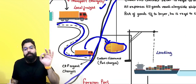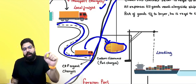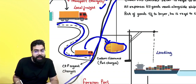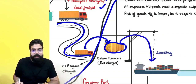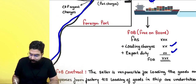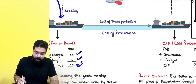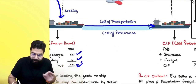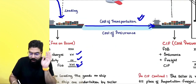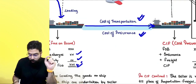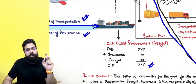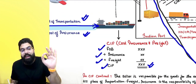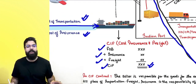FAS means alongside the ship. If you add loading charges and export duty to FAS, it becomes FOB. FOB plus ocean freight and cost of insurance gives you CIF — cost, insurance, and freight. FOB plus insurance plus freight equals CIF value.